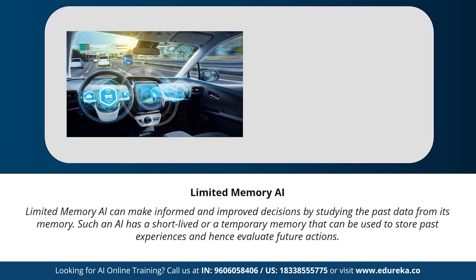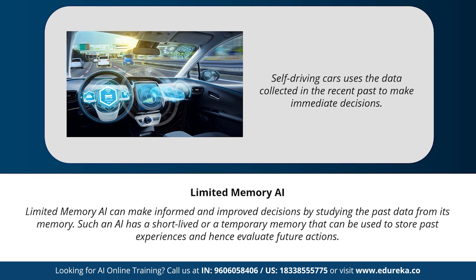Next we have limited memory AI. Limited memory AI can make informed and improved decisions by studying past data from its memory. Such AI has a short-lived or temporary memory that can be used to store past experiences and evaluate future actions. Self-driving cars are limited memory AI that use data collected in the recent past to make immediate decisions. For example, they use sensors to identify civilians crossing the road, steep roads, or traffic signals, and use this to make better driving decisions and prevent future accidents.